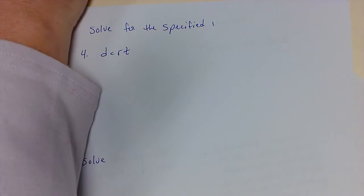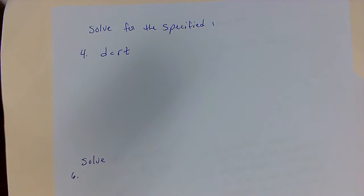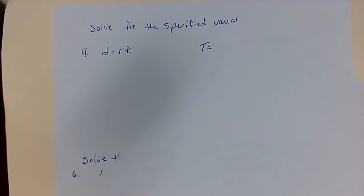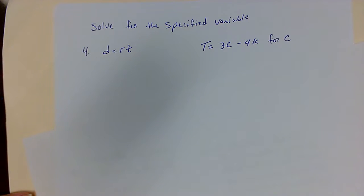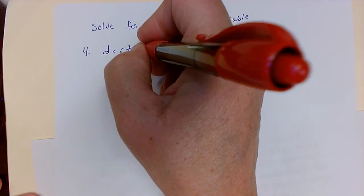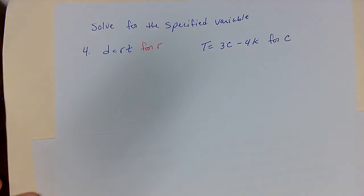We are going to be solving for the specified variable. We'll begin with d equals rt. The first thing I want to do is know what letter I'm solving for, and in this case we are going to solve for r.